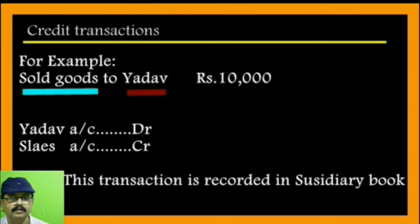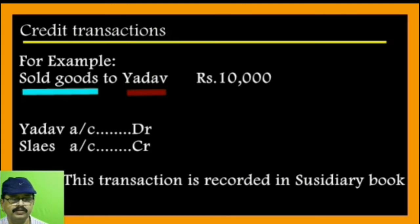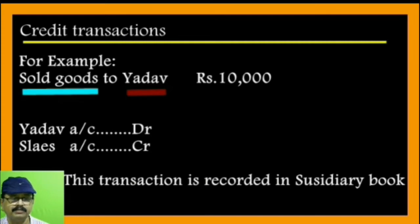For the credit transaction example — sold goods to Yadau 10,000 rupees — two accounts are involved: Yadau and goods. Yadau is receiving, so Yadau account is debit and sales account is credit. This transaction is recorded in the subsidiary books, and one of the subsidiary books is the sales book.